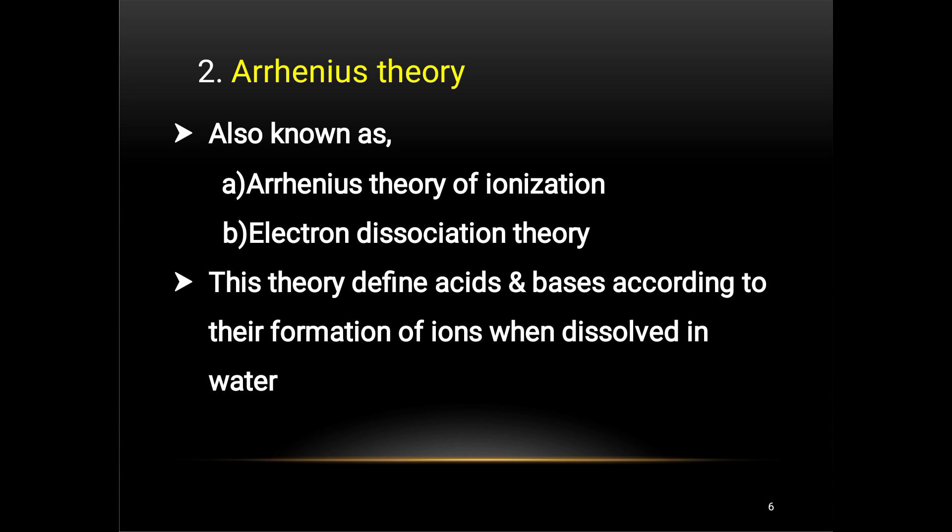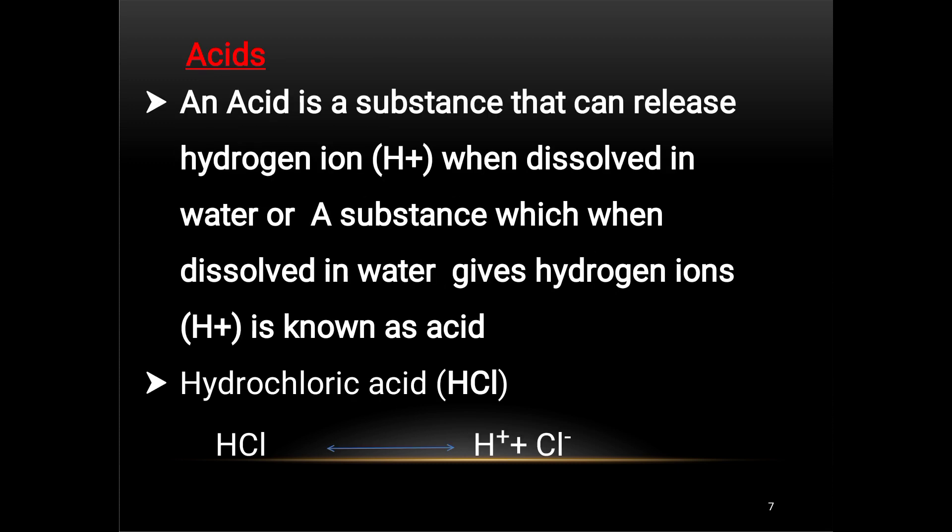According to Arrhenius theory, an acid is a substance that can release H+ (hydrogen) ions when dissolved in water. Example: hydrochloric acid, HCl, when dissolved in water forms H+ and Cl-; it releases H+ ions.